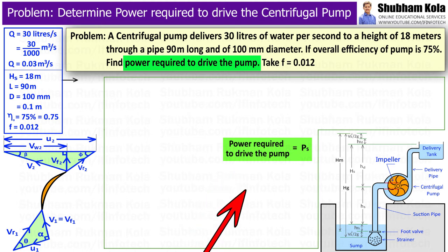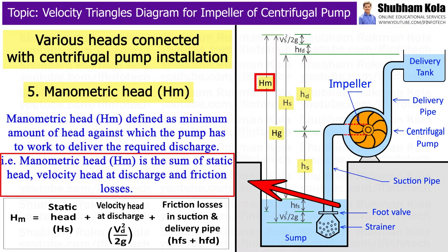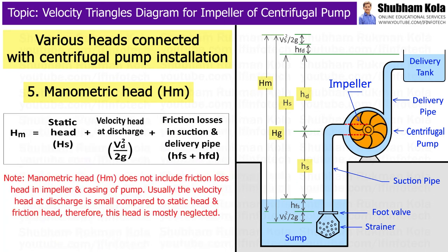So, to calculate this value, we use the equation of overall efficiency, where Hm is manometric head. Manometric head is the sum of static head, velocity head at discharge, and friction losses. But it should be noted that manometric head does not include friction loss head in impeller and casing of pump.